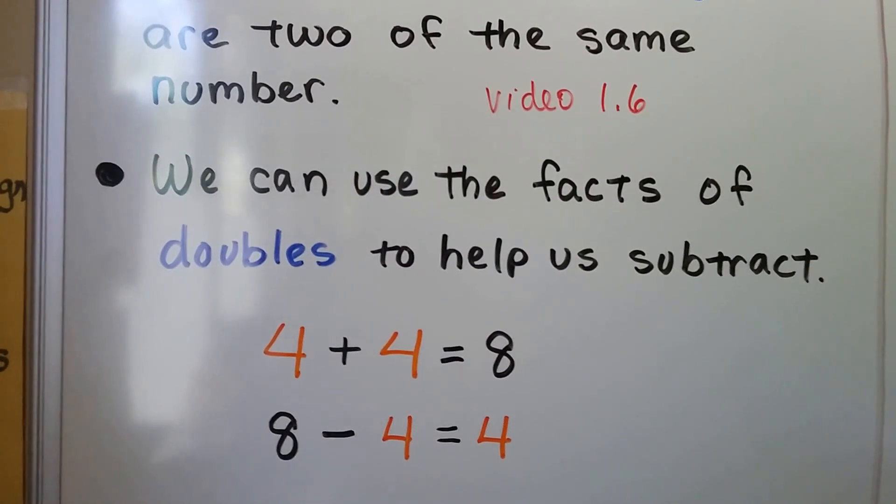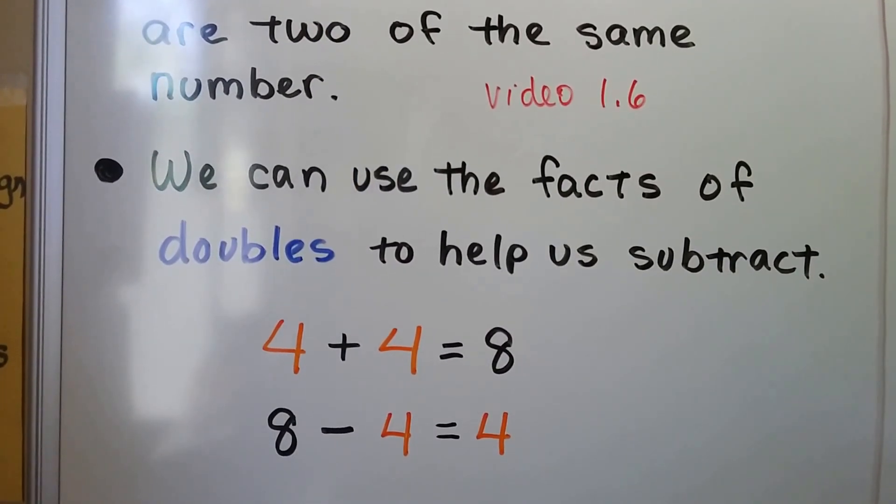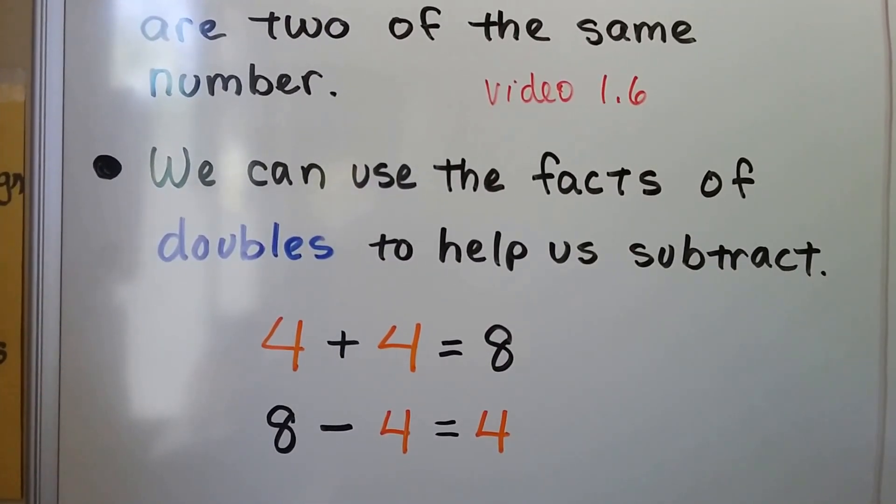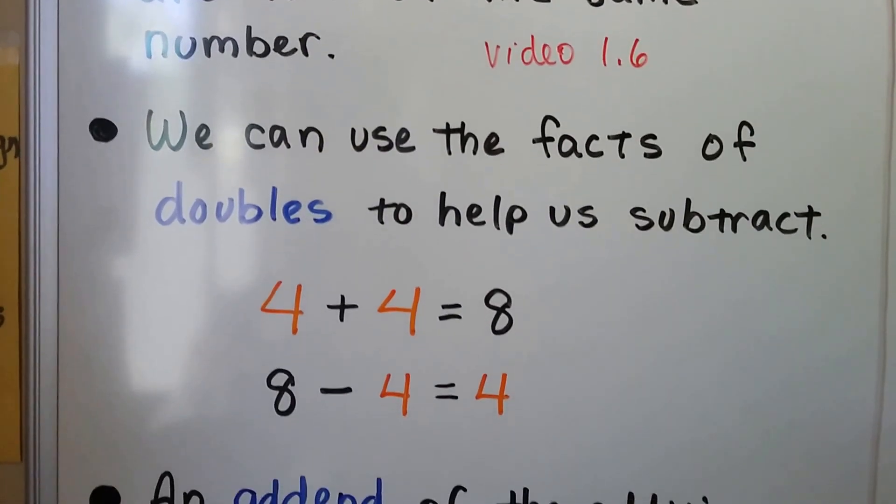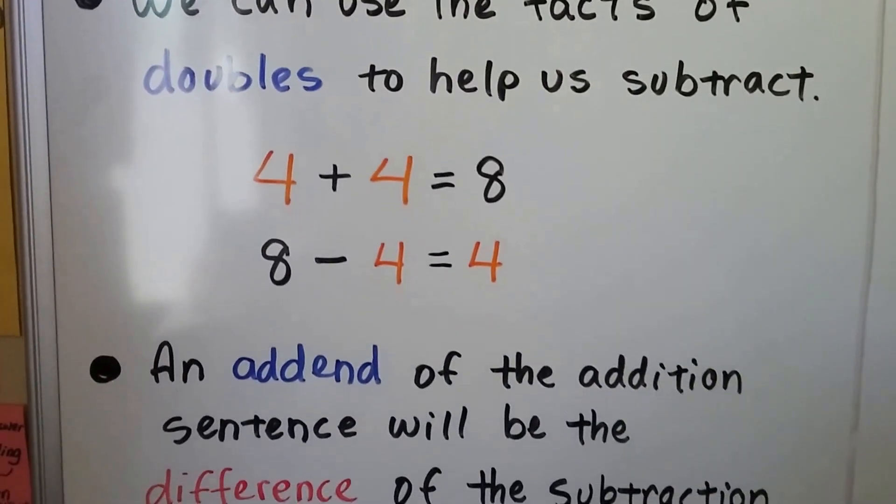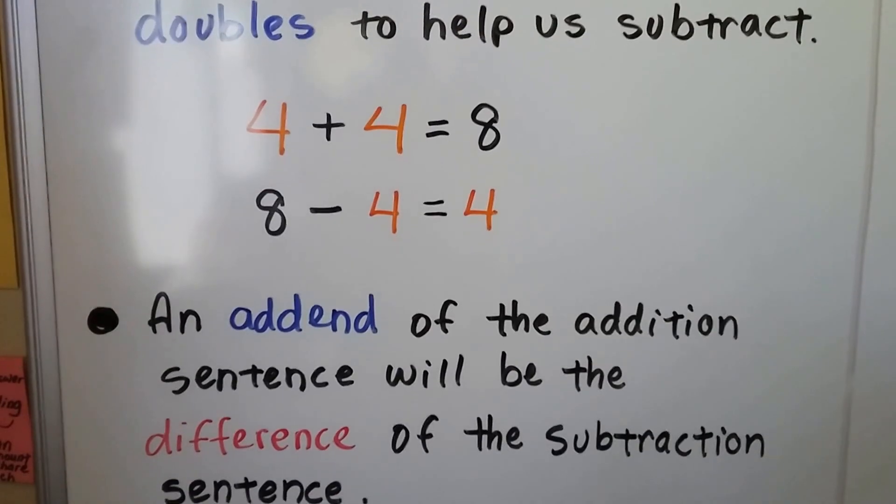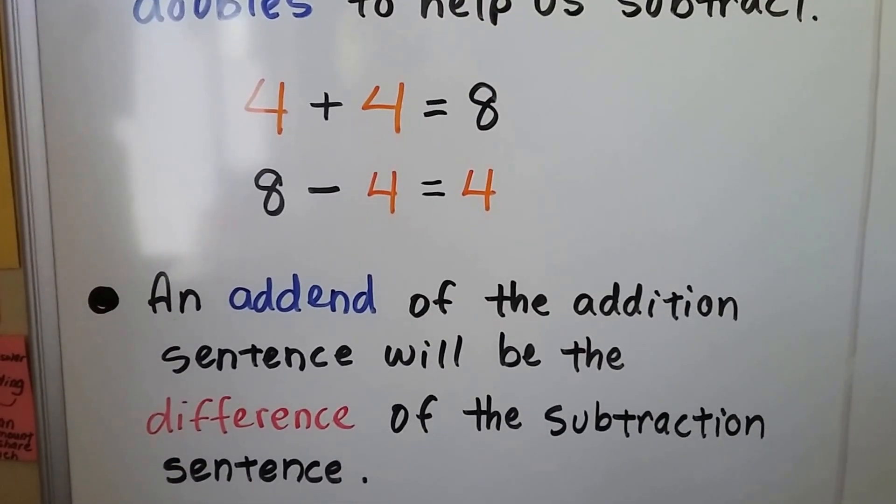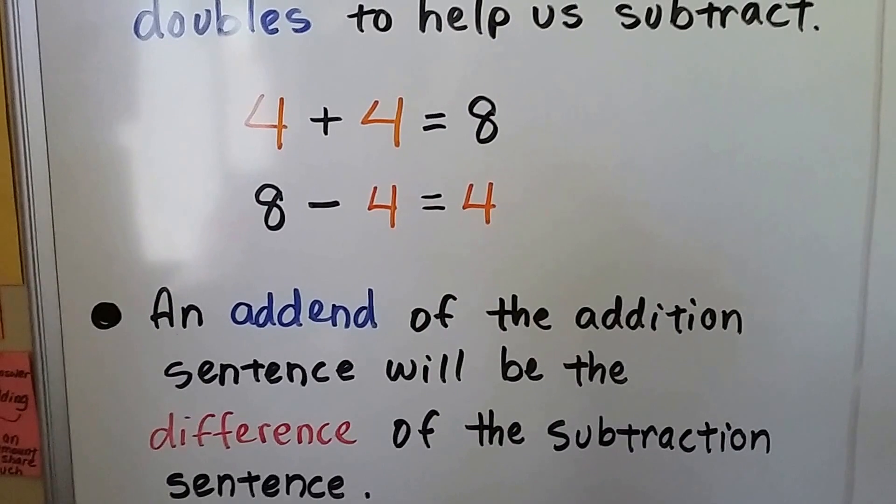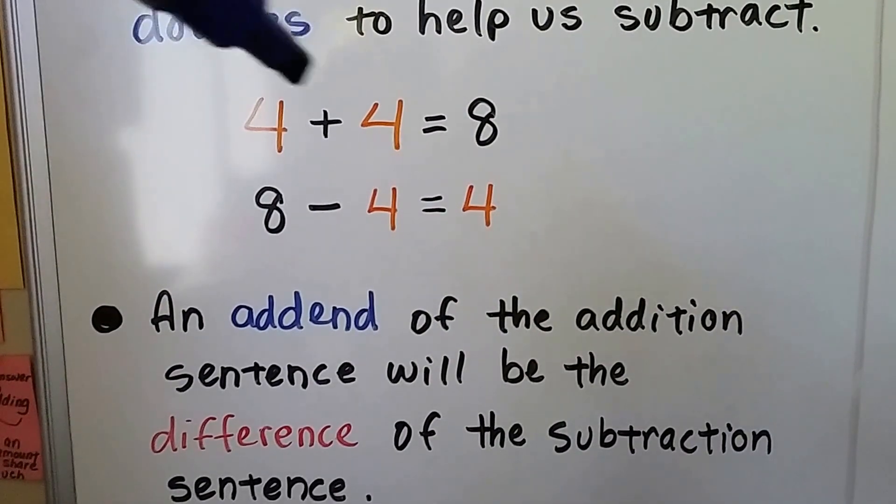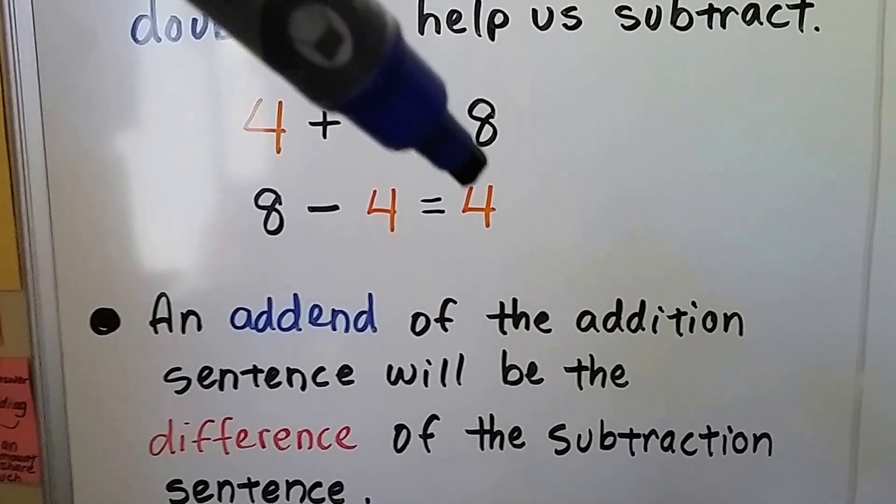That means 8 minus 4 equals 4. An addend of the addition sentence will be the difference of the subtraction sentence. An addend of the addition sentence will be the difference of the subtraction sentence.